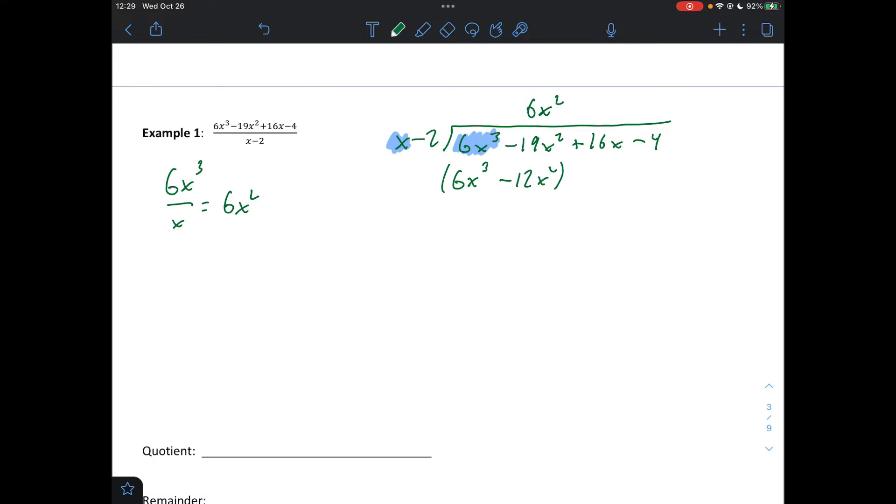The next step in long division is to subtract. If we do this right, these should cancel every time. If that does not happen, you've done something wrong. Please go back and check. Then we have negative 19 minus negative 12, which is negative 7x squared. And then we bring down everything that's left over. And then we simply repeat the process.